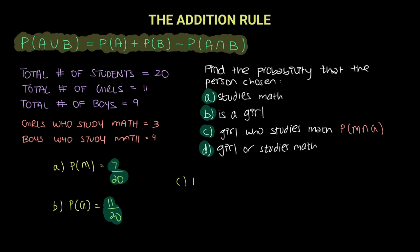So we write it as the probability of math and girl. So there are 3 out of 20. And that is our answer.